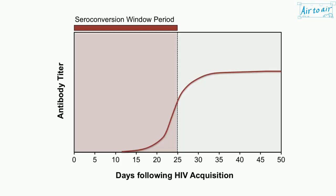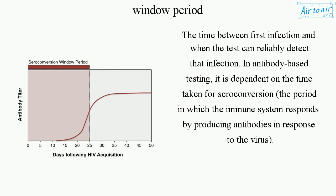Window period is the time between first infection and when the test can reliably detect that infection. In antibody-based testing, it is dependent on the time taken for seroconversion — the period in which the immune system responds by producing antibodies in response to the virus.